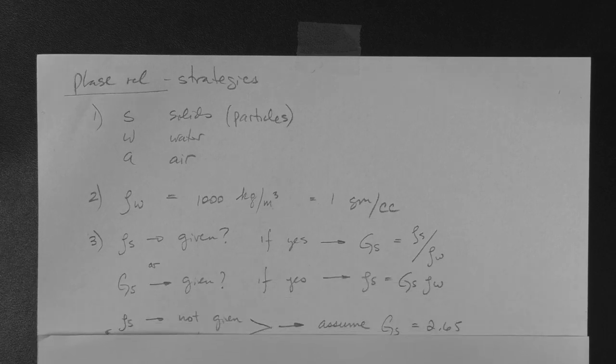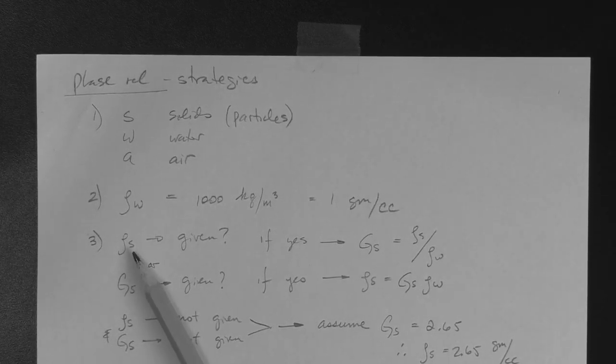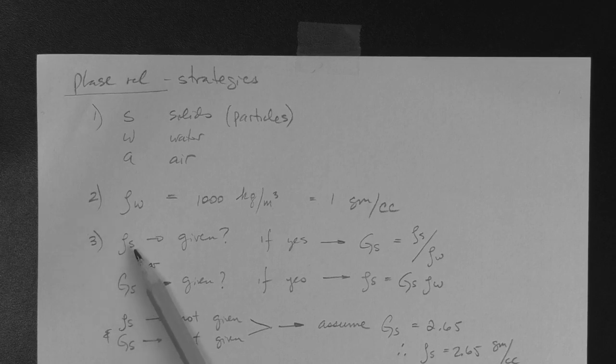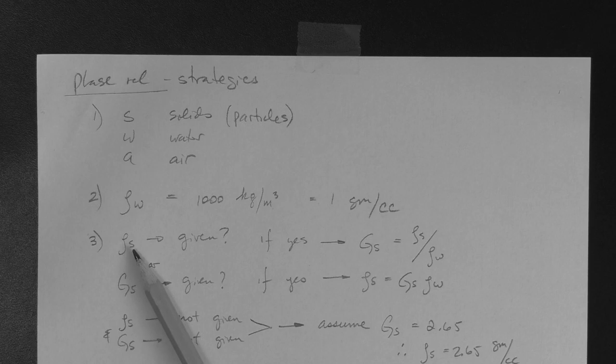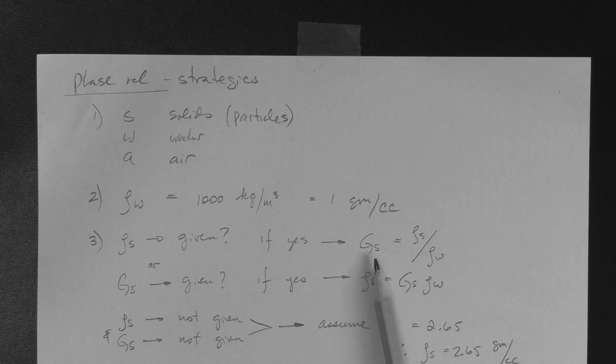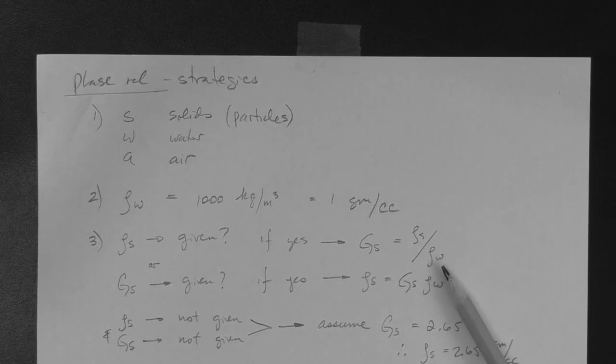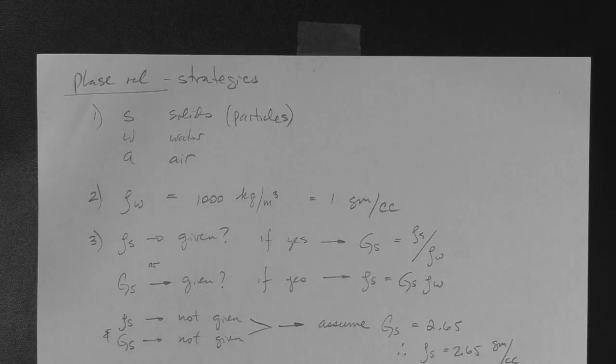Number three. If you are given or if you know the mass density of the solids, that is the mass density of the minerals that make the particles, basically the average one for all minerals in the soil. If you do know it, then you automatically can determine the specific gravity of solids, which is simply the known value of mass density of solids divided by the mass density of water, which you know. Very simple.